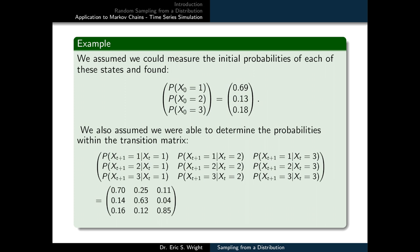We assumed that we could measure the initial probabilities of each of these three states and found them to be 0.69, 0.13, and 0.18 for the probabilities of finding the landscape dominated by shrubs, grasses, or bare ground initially. We also assumed that we were able to determine the probabilities within the transition matrix, and these are given in the three by three matrix below where the first column has the values 0.7, 0.14, 0.16, the second column has the values 0.25, 0.63, 0.12, and the third has the values 0.11, 0.04, and 0.85.